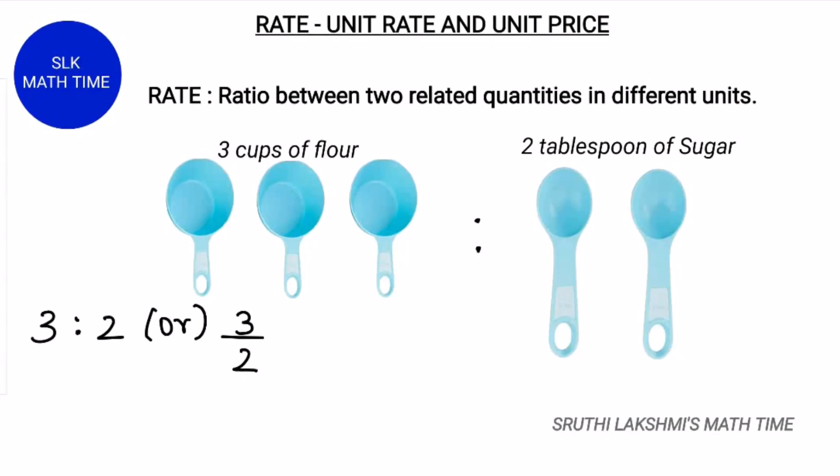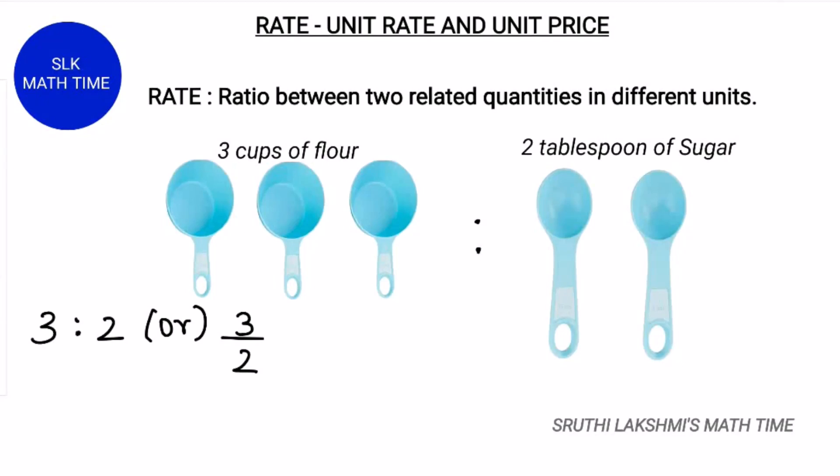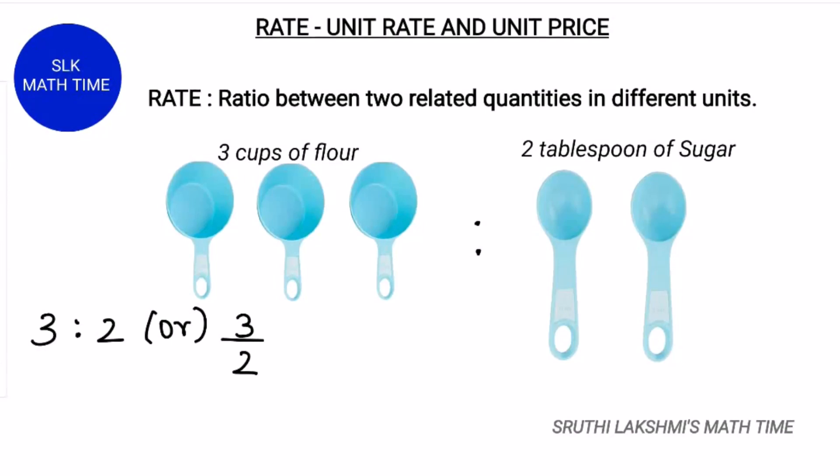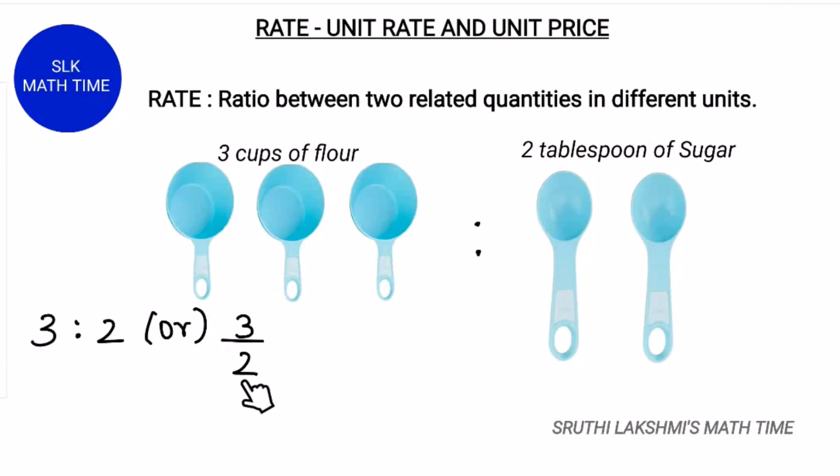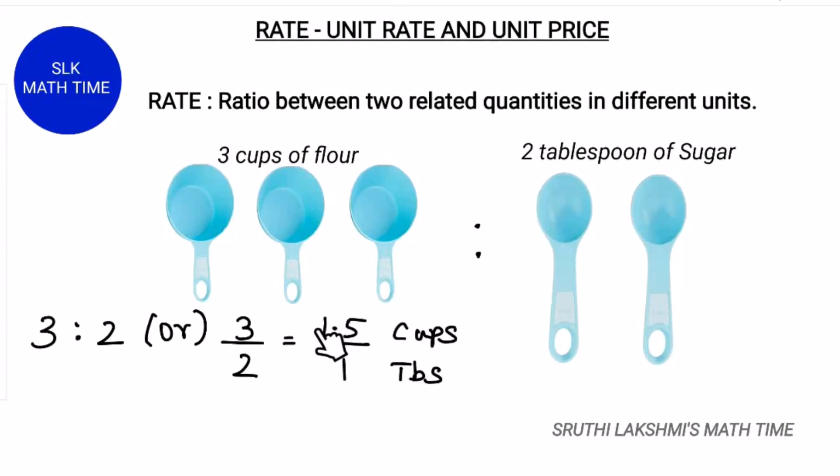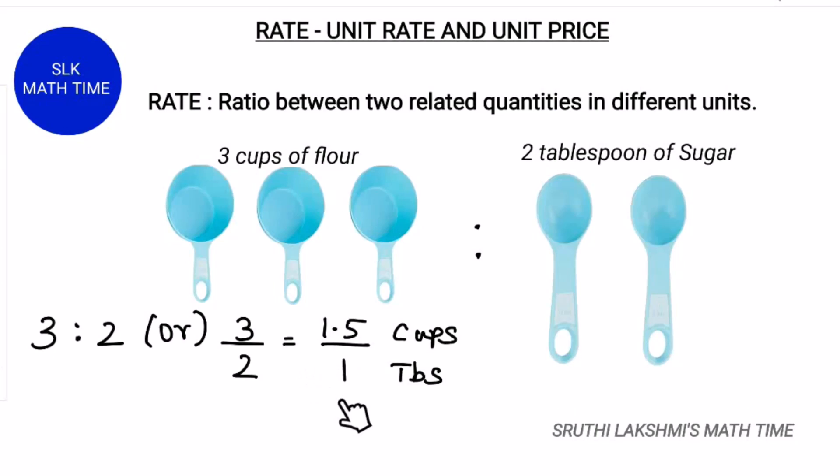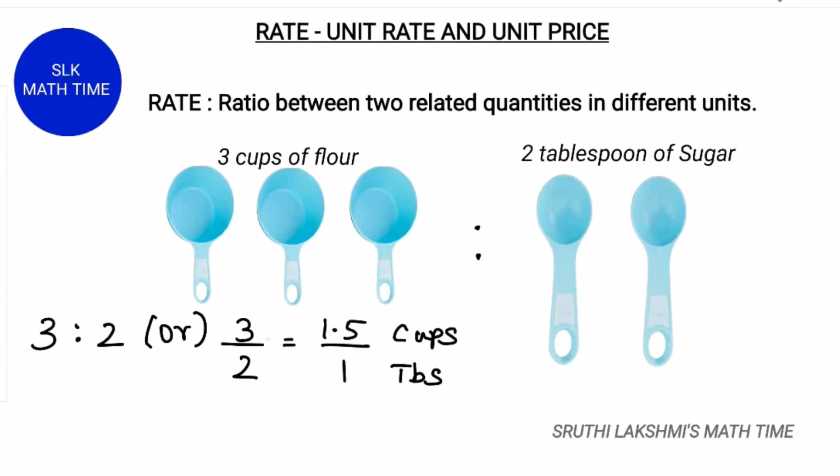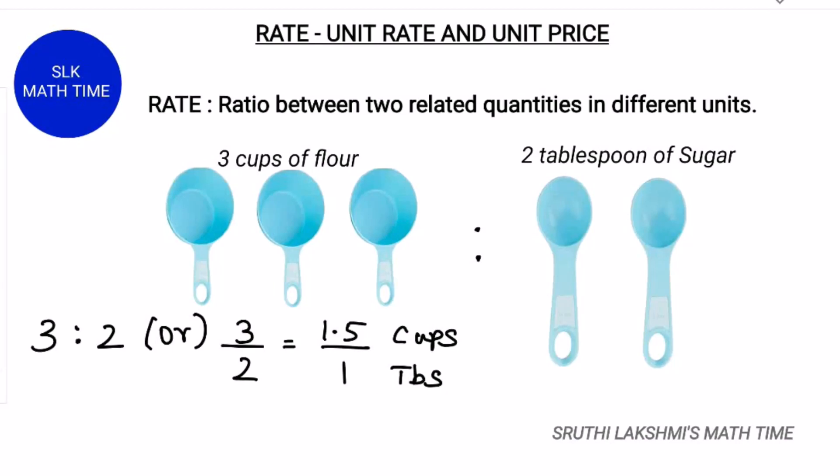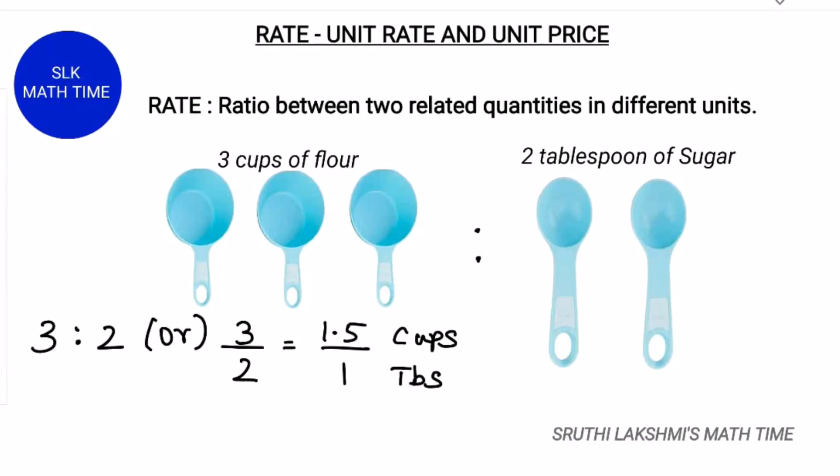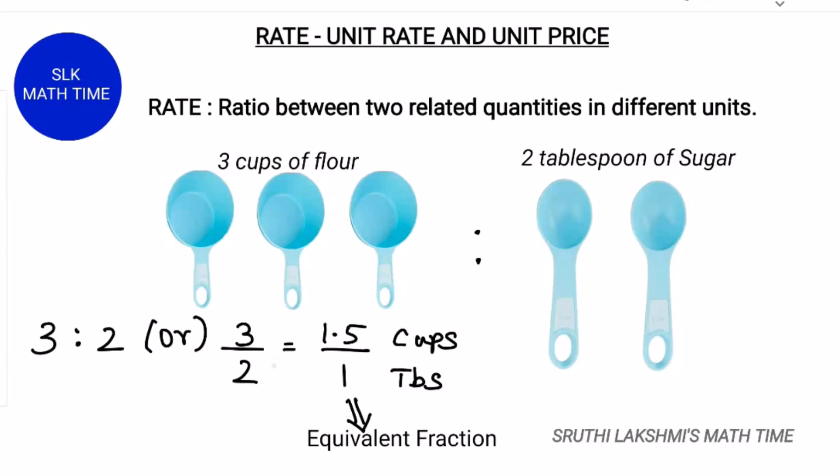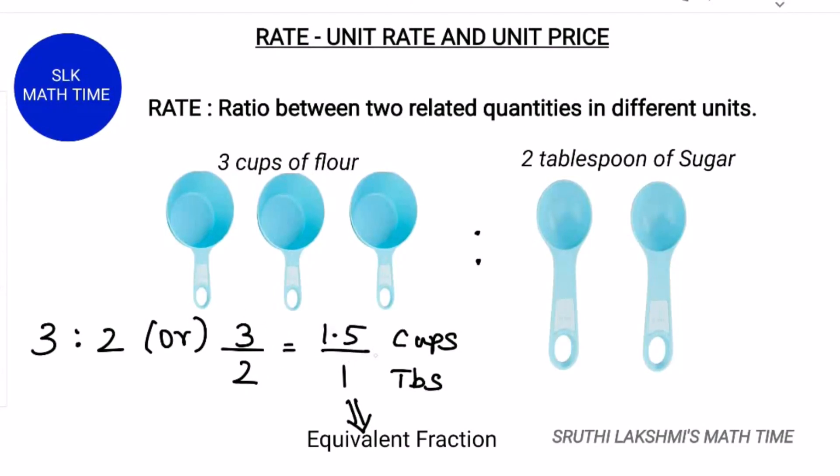A unit rate is a rate that has 1 as its denominator. To find a unit rate, set up a ratio as a fraction and then divide the numerator by the denominator. So to find the unit rate of 3 by 2, we divide 3 by 2, we get 1.5 and write the denominator as 1. So the unit rate of 3 by 2 is 1.5 cups by 1 tablespoon. For every teaspoon, we add 1.5 cups of flour. Here, 3 by 2's equivalent fraction is 1.5 by 1.